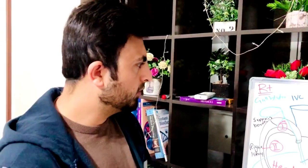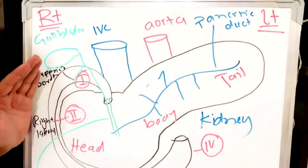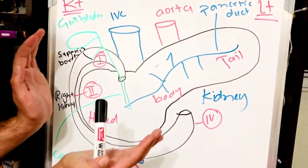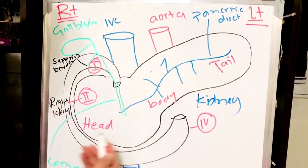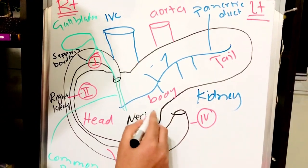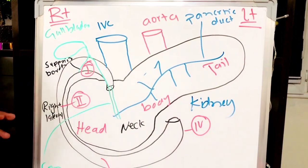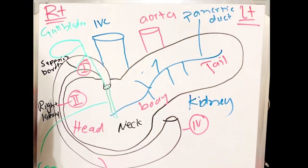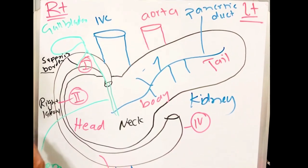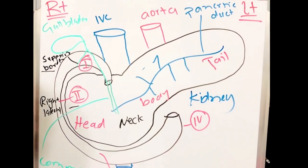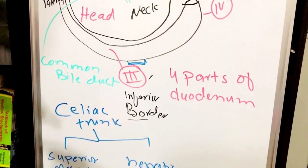Looking at the diagram of the pancreas, we can see the duodenum with its C-shaped concavity, and within this concavity lies the pancreas. The four parts of the pancreas are the head, neck, body, and tail. The first part of the duodenum is related to the superior border, the second part is related to the right lateral border, and the third part of the duodenum is related to the inferior border.